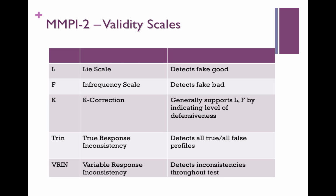One of the really cool things about the MMPI-2 is the sophisticated validity scales. The biggest problem with objective personality tests is that people can lie. You don't have to tell me the truth on a test. But the MMPI really picks up on a lot of these things. It's widely used in forensics. I want you to pay attention to these five validity scales in particular, though there are more.